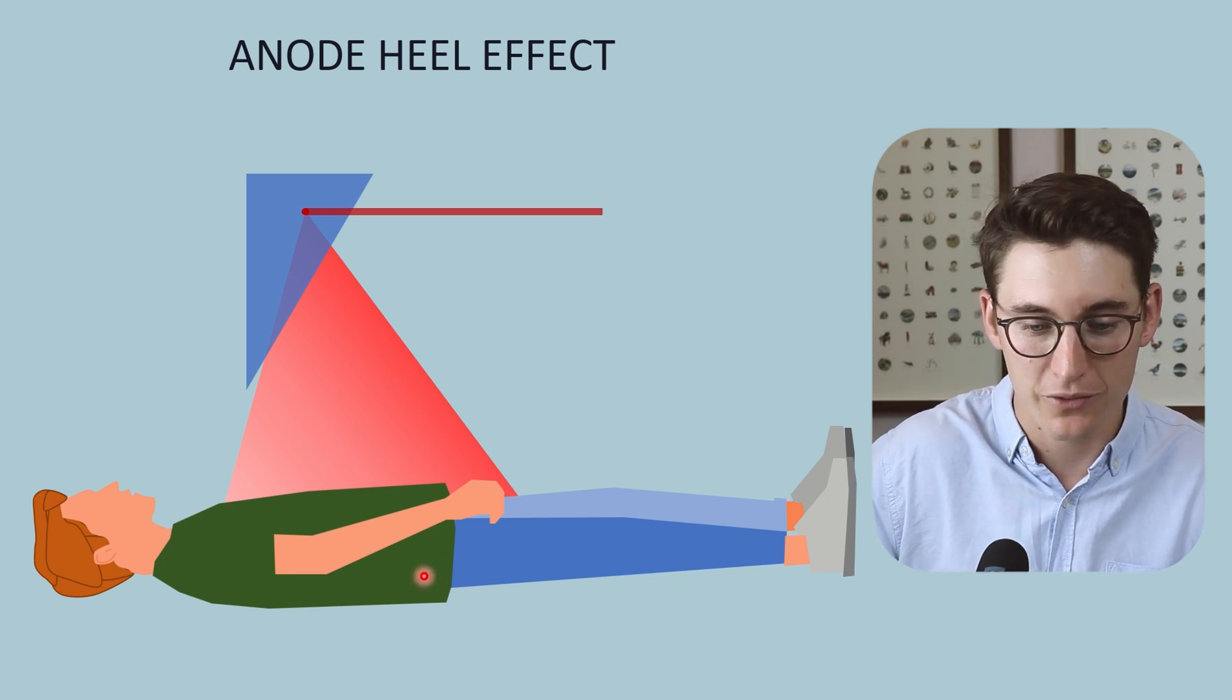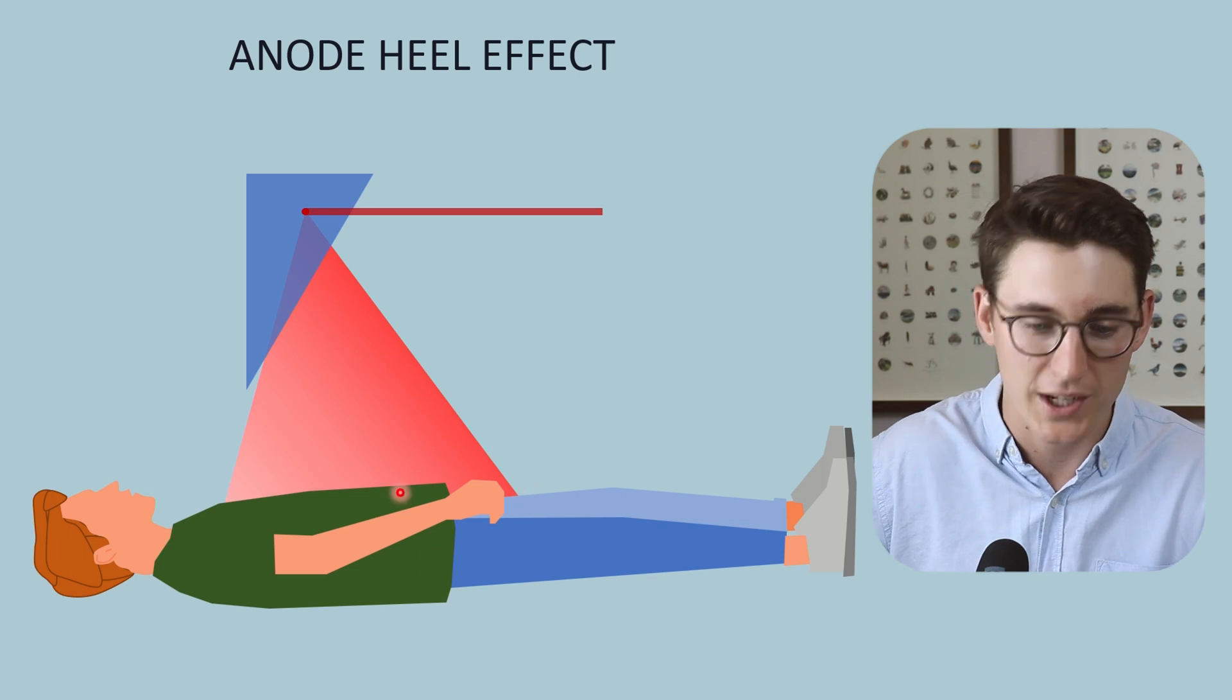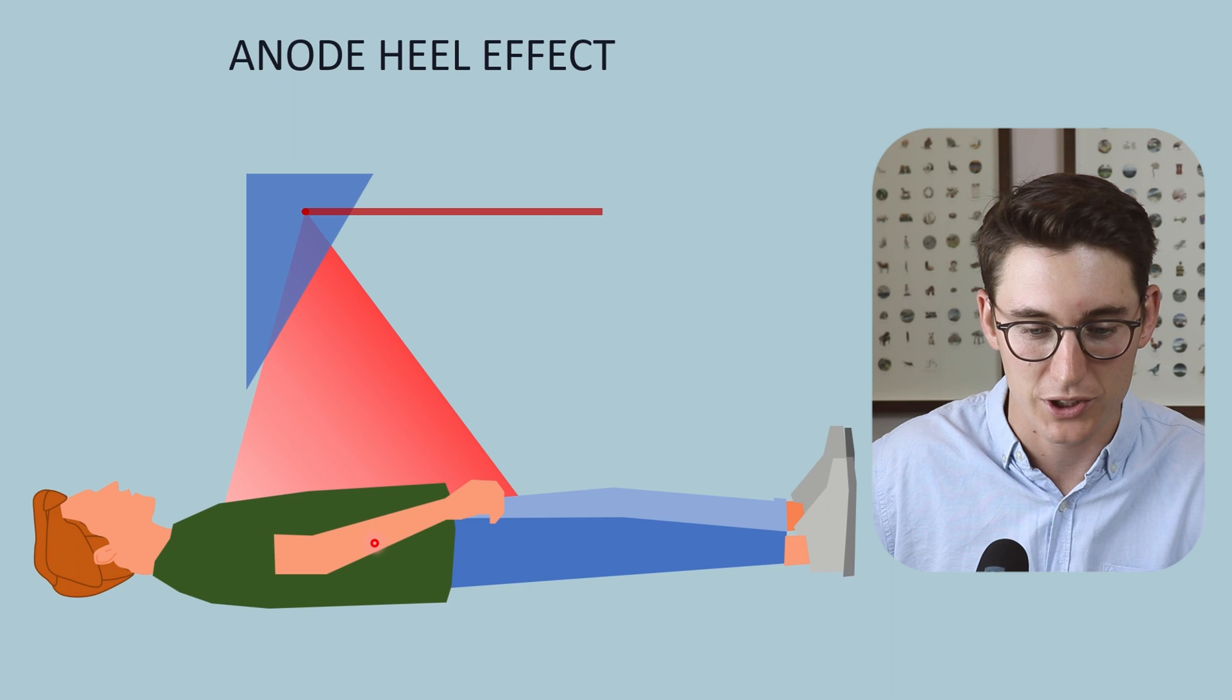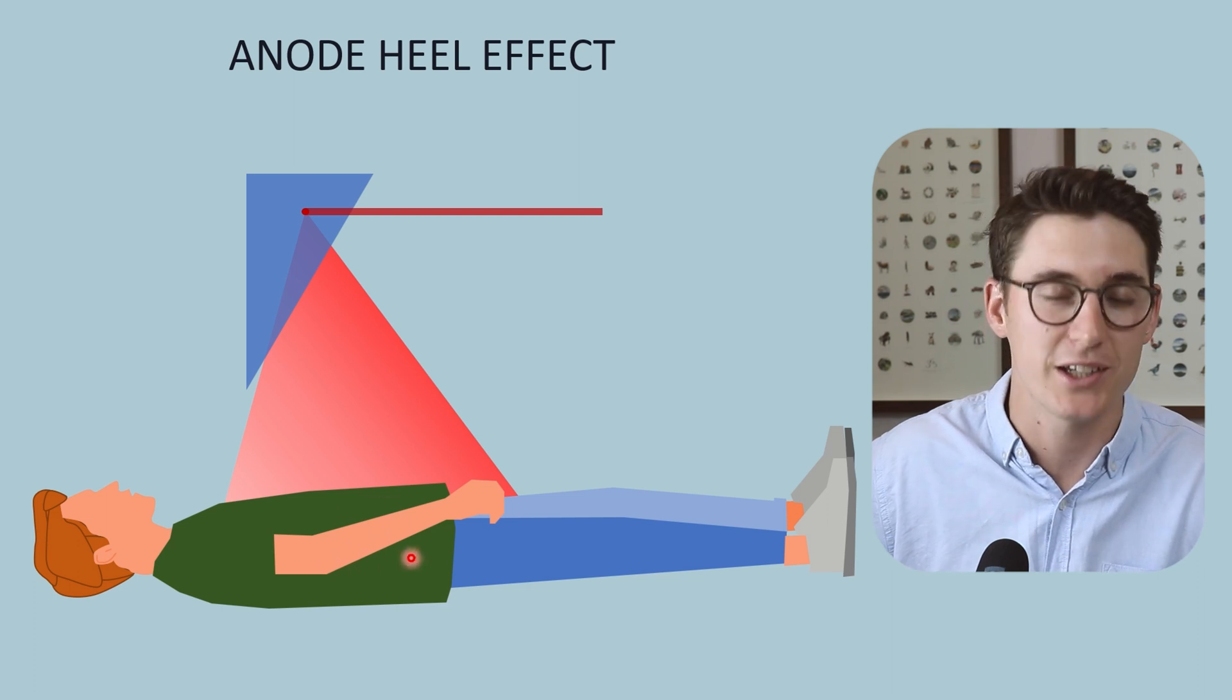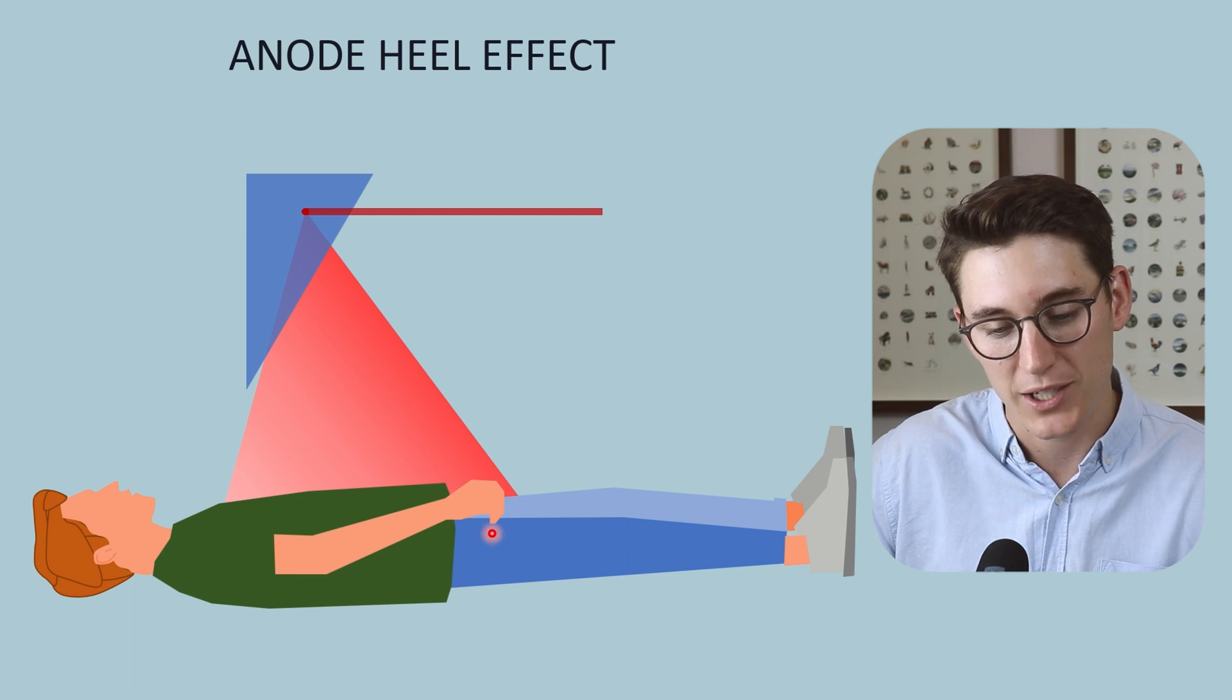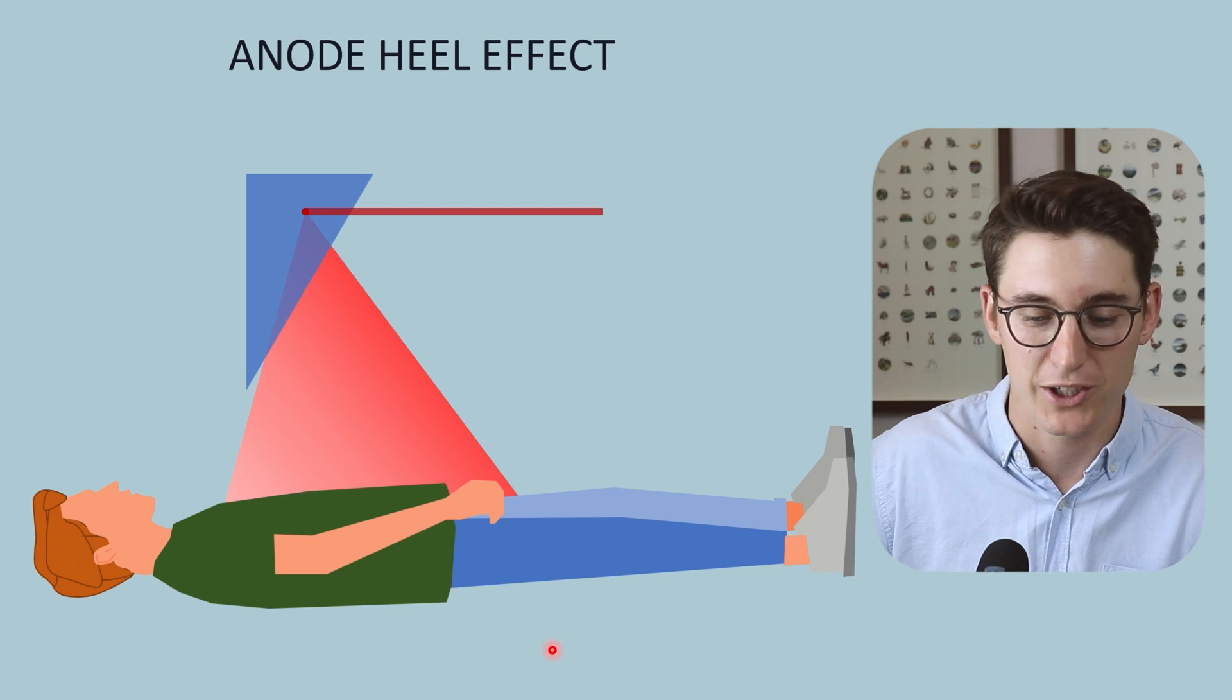So for here, we can see that our pelvis which contains our pelvic bones and our pelvic organs, that is more dense than our abdomen which mainly contains air and some abdominal organs. There is less dense bone here in our abdomen. We can use the more intense part of the beam that has better penetration to go through the more dense part of our patient.